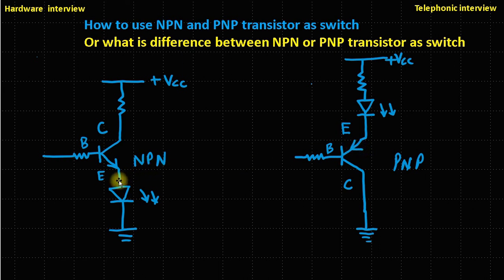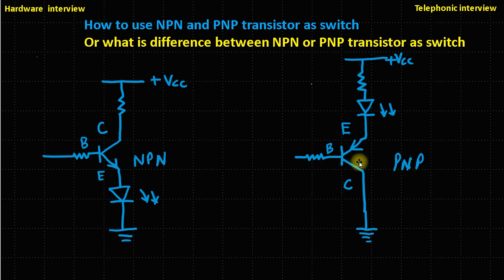Another difference is in the emitter symbol: the arrow is pointing outside for NPN, indicating current flows outward. In both transistors, the arrow always indicates the emitter terminal.